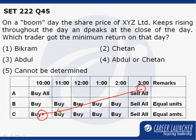Now when we come to B and C, though they are buying at the same times, the difference is that B is buying equal units whereas C is buying equal amounts.